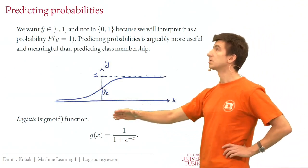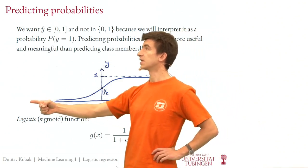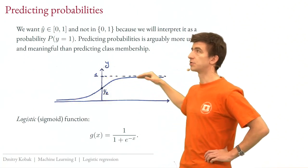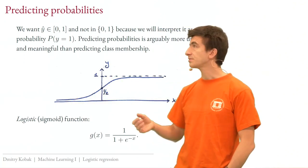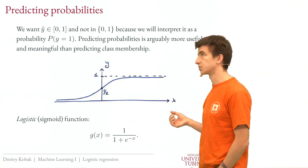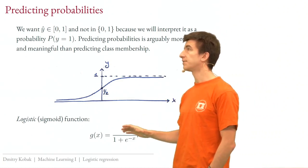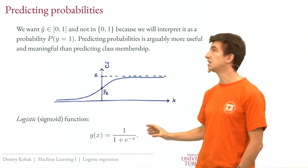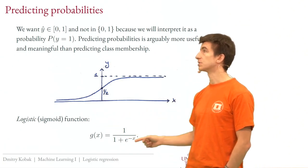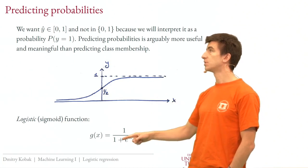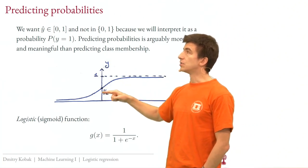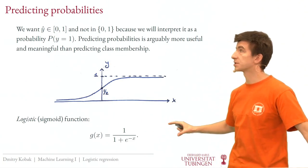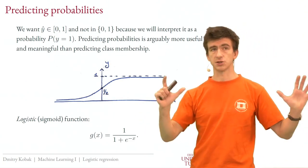How do we achieve predictions between 0 and 1? We want a function that goes to 0 on one end and to 1 on the other. There are many such functions, but a very convenient and common choice is the logistic function, also called the sigmoid function. Its equation shows that when x goes to minus infinity, the output goes to 0; when x goes to plus infinity, it goes to 1; and at x equals 0, it's right in the middle at 0.5. This is the raw logistic function without parameters.